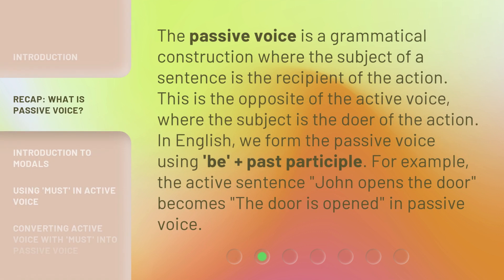The passive voice is a grammatical construction where the subject of a sentence is the recipient of the action. This is the opposite of the active voice, where the subject is the doer of the action. In English, we form the passive voice using 'be' plus past participle. For example, the active sentence 'John opens the door' becomes 'The door is opened' in passive voice.